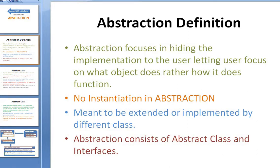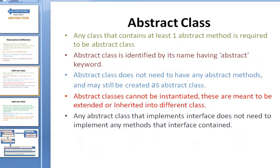Today we're going to talk about abstraction. Abstraction focuses on hiding the implementation from the user, letting the user focus on what an object does rather than how it functions. The main purpose of abstraction is hiding the implementation. There is no instantiation in abstraction — abstractions are meant to be extended or implemented by different classes. To make abstraction happen, it has to be either abstract classes or interfaces.